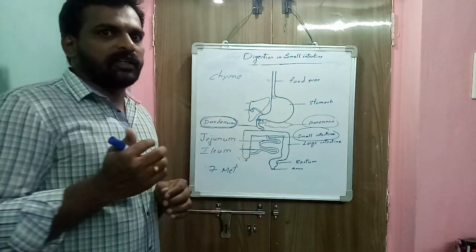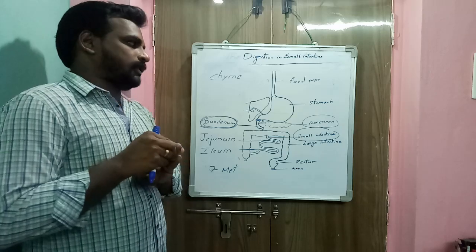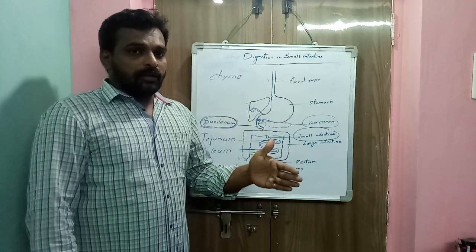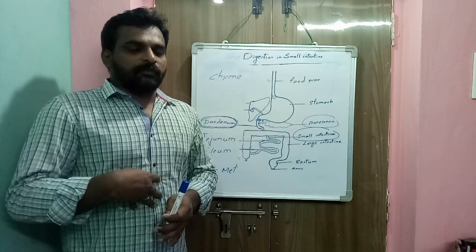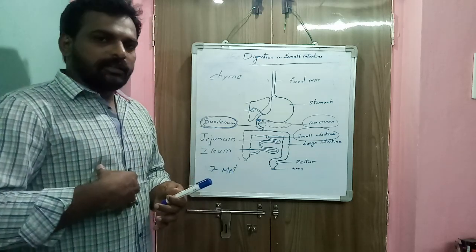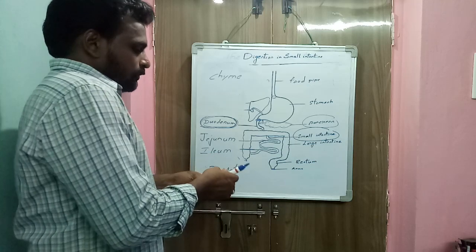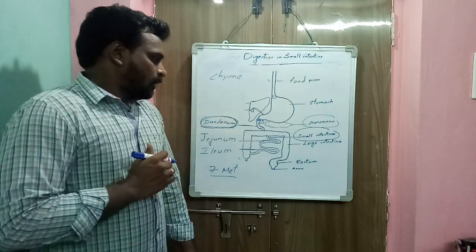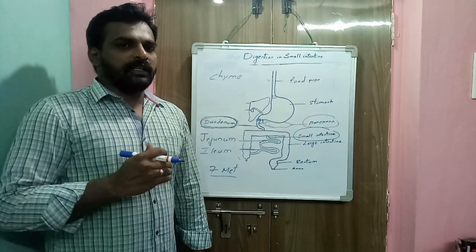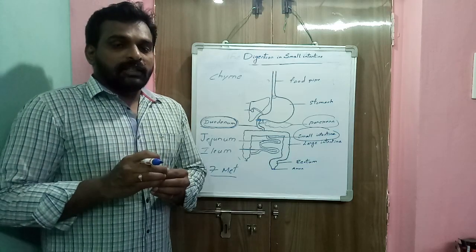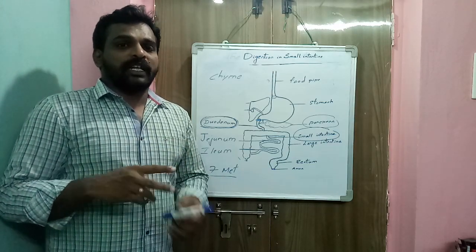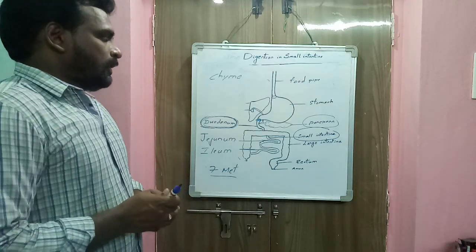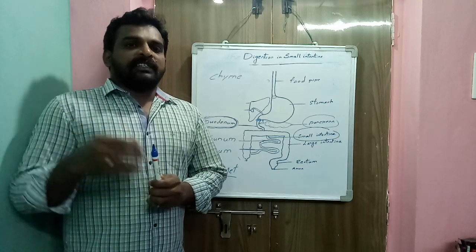Intestines are of two types: small intestine and large intestine. They are present between the stomach and the anus, and are all coiled up to fit inside the abdomen. The small intestine is 7 meters in length, or 20 to 25 feet. Its diameter is only about as big around as our middle finger — approximately 1 inch or 2.5 centimeters.